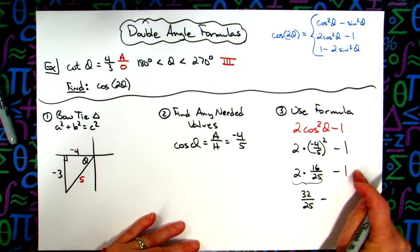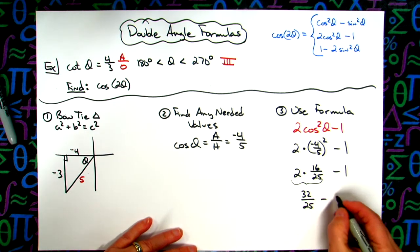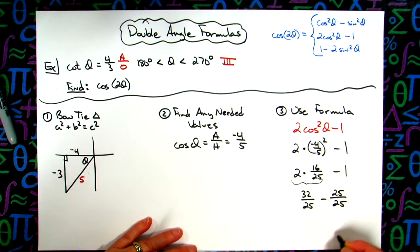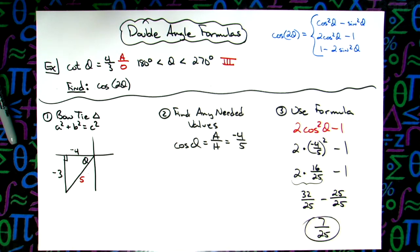Since I am subtracting here and I have a fraction, I need to convert this into a fraction with the same denominator. So we'll make that twenty-five over twenty-five. And then thirty-two minus twenty-five on top is going to give me a seven. So overall value there of seven over twenty-five.